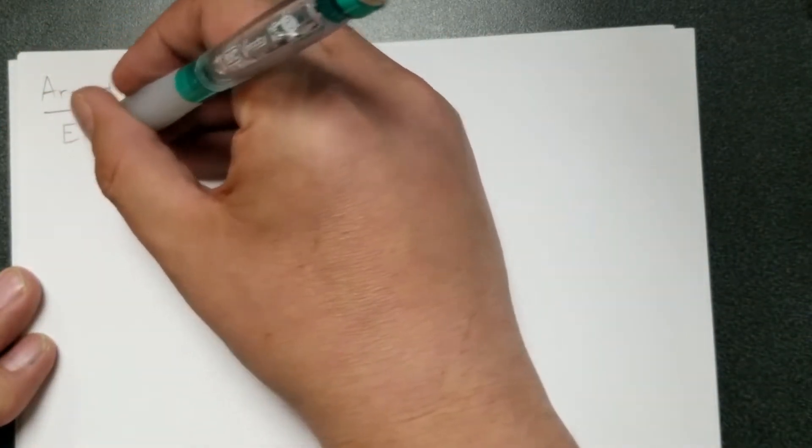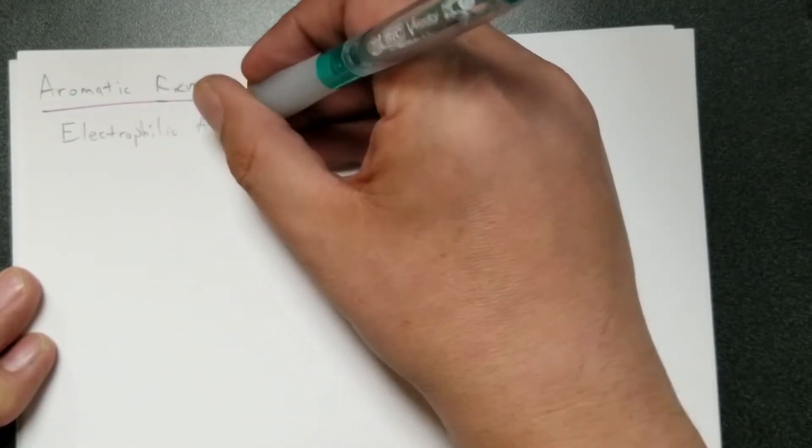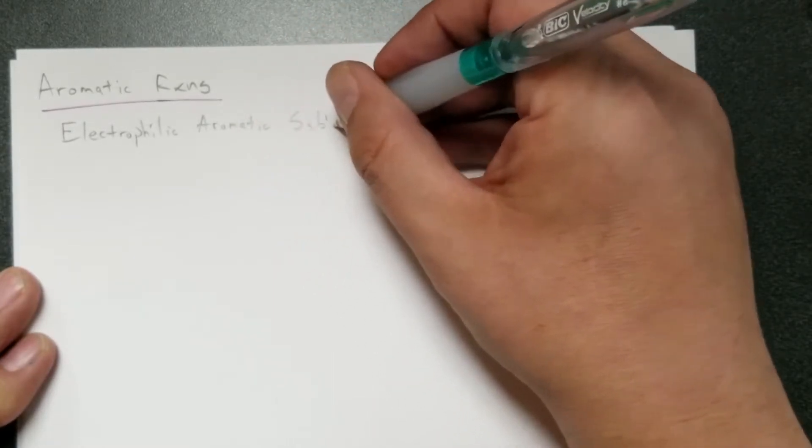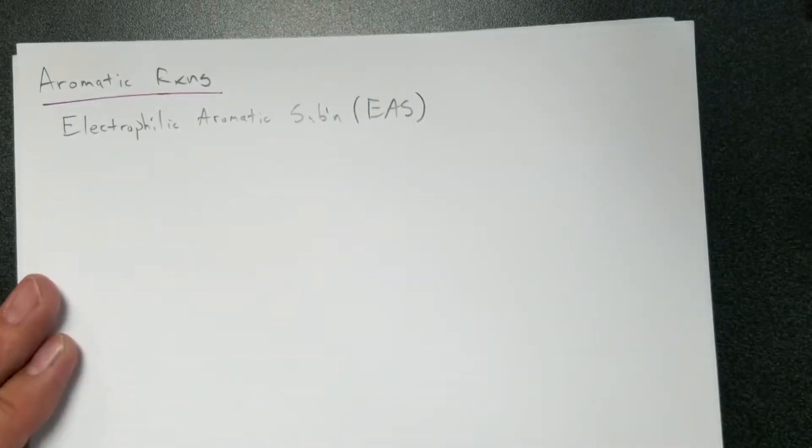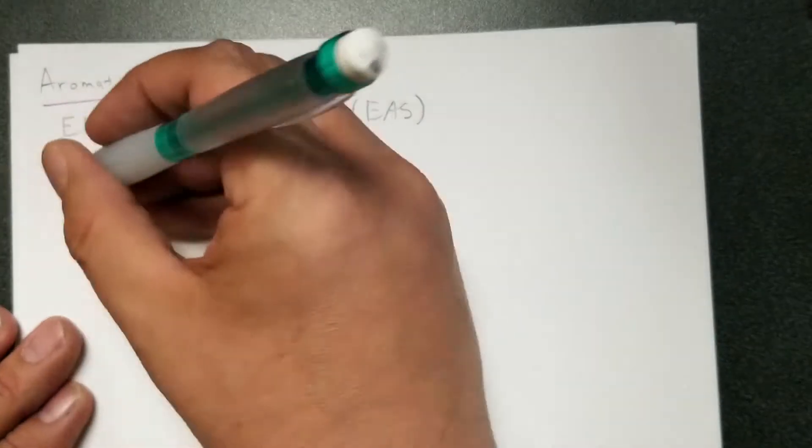Electrophilic aromatic substitution, or EAS for short. There are five reactions in this set here that you're going to have to know. They all kind of work the same way.